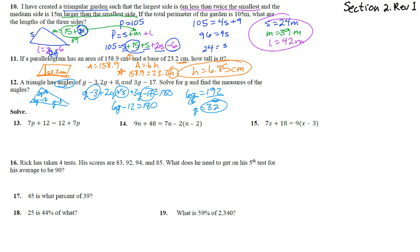Now substituting g equals 32 into each angle: the first angle is 32 minus 3 equals 29 degrees; the second is 2 times 32 plus 8 equals 72 degrees; and the third is 3 times 32 minus 17 equals 79 degrees.